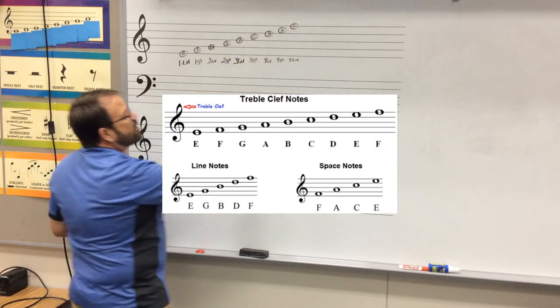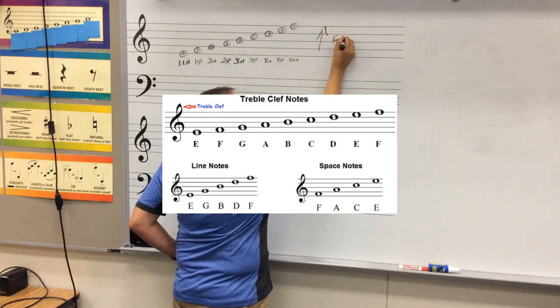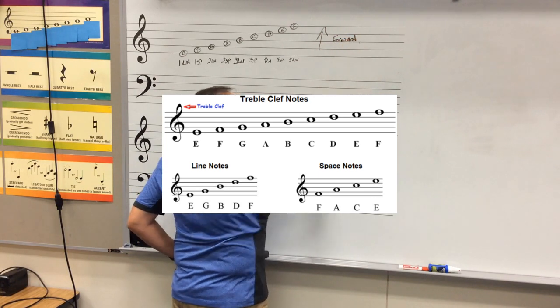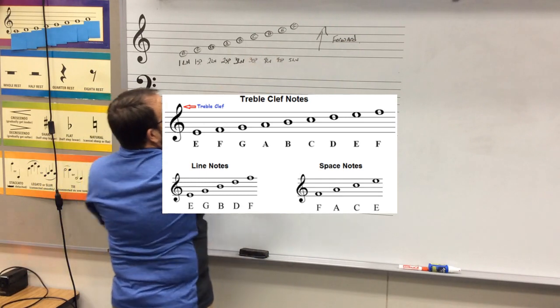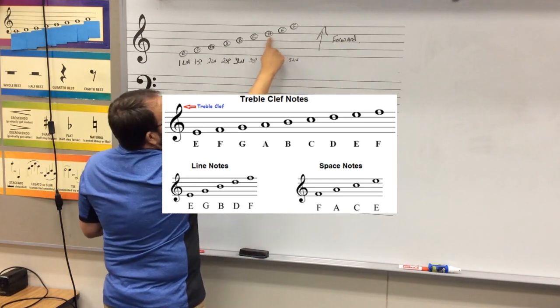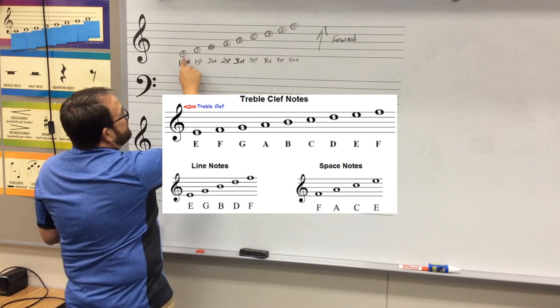Anytime that you're going up, you go forward in the alphabet. Okay? Anytime you're going down, you go backwards. So look, F, E, D, C, B, A, G, F, E.